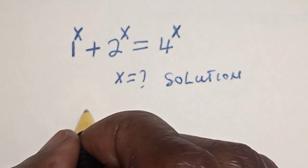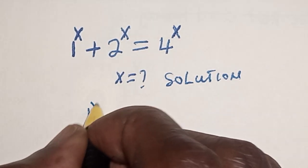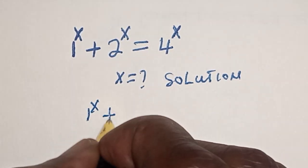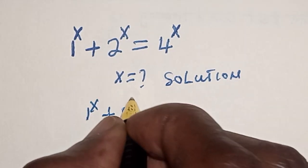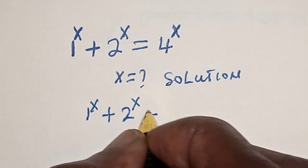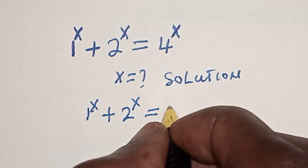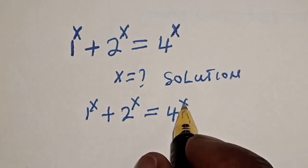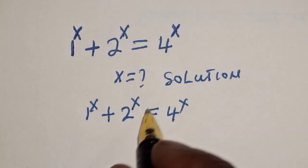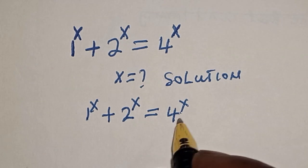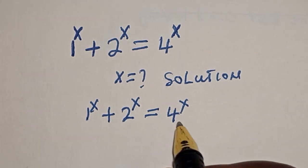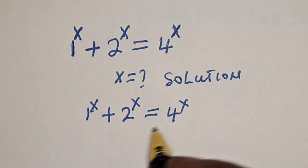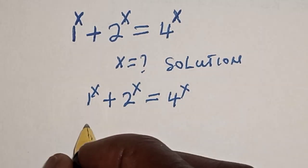We have 1 raised to power s plus 2 raised to power s is equal to 4 raised to power s. Now let's divide both sides by 4 raised to power s.